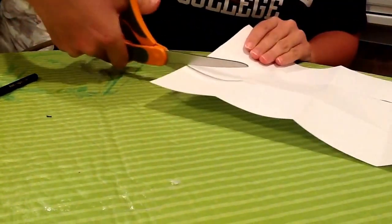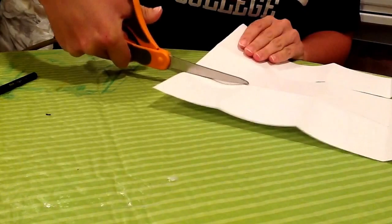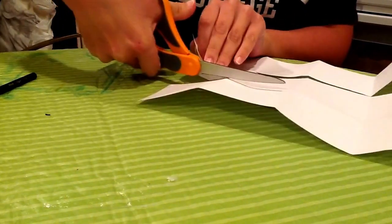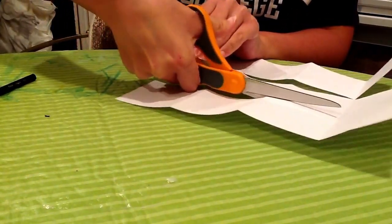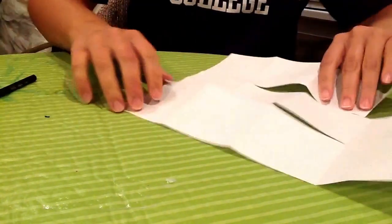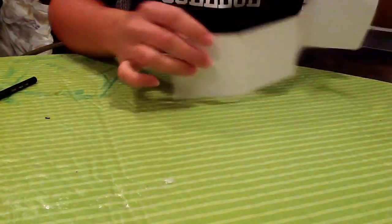Flip it over on the other side. You're going to make your three section cut. 1, 2, and 3. So this way it opens up, like that.